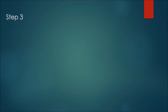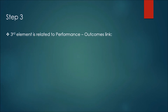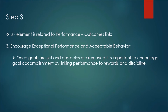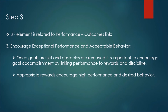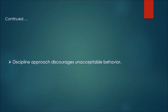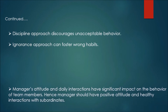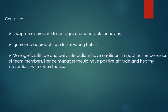Step 3 relates to the performance-outcomes link: encourage exceptional performance and acceptable behavior. Once goals are set and obstacles removed, it is important to encourage goal accomplishment by linking performance to rewards and discipline. Appropriate rewards encourage high performance and desired behavior, while a discipline approach discourages unacceptable behavior. Ignoring behavior can foster wrong habits. Managers' attitudes and daily interactions have significant impact on team behavior, so managers should maintain positive attitudes and healthy interactions with subordinates.